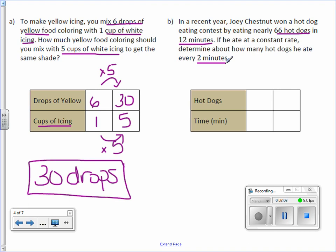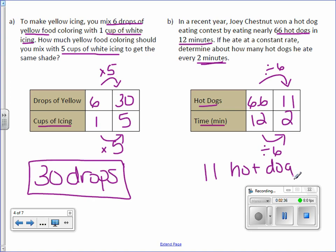So start with what we know: 66 hot dogs in 12 minutes. We want to find 2 minutes. How do we get from 12 to 2? We divide by 6. Do the same above. 66 divided by 6 is 11. So he ate 11 hot dogs in 2 minutes.